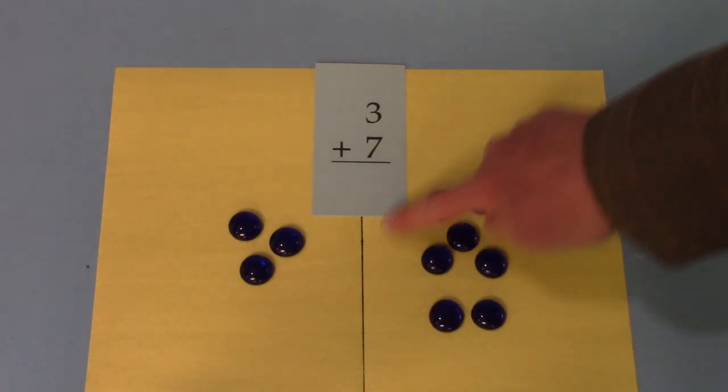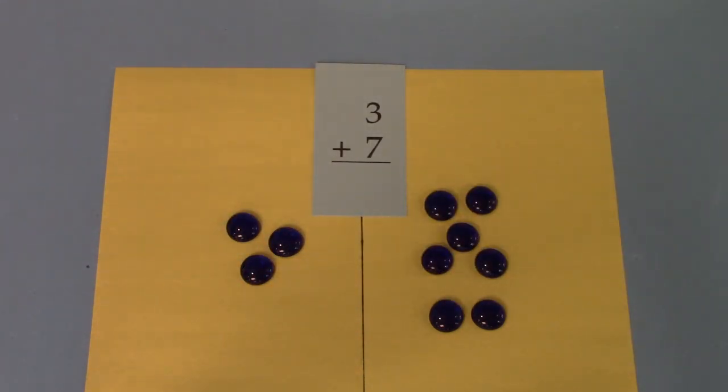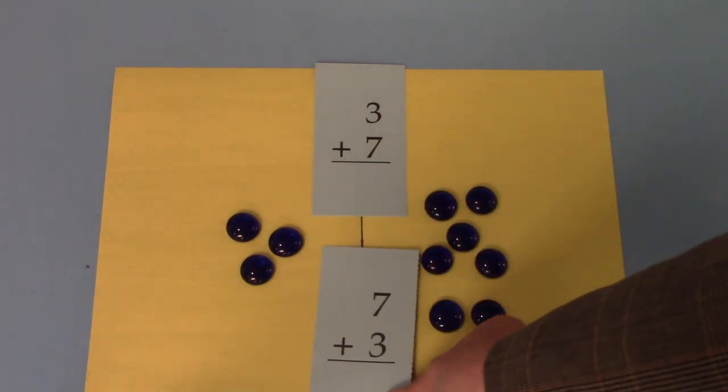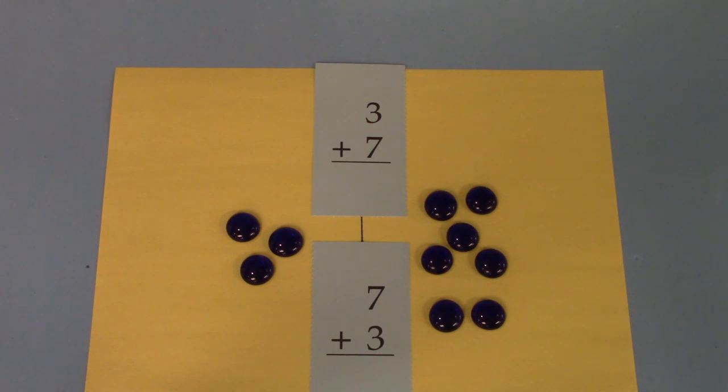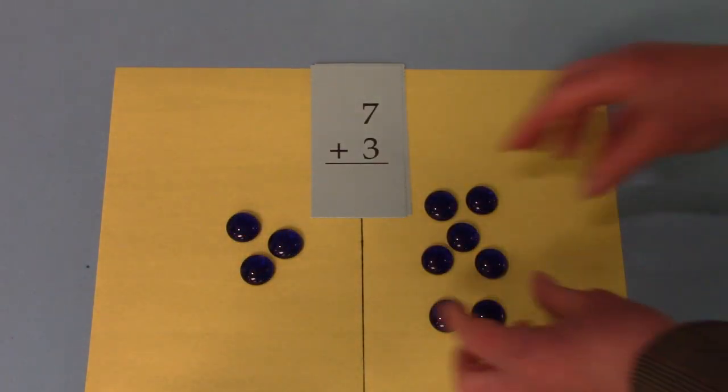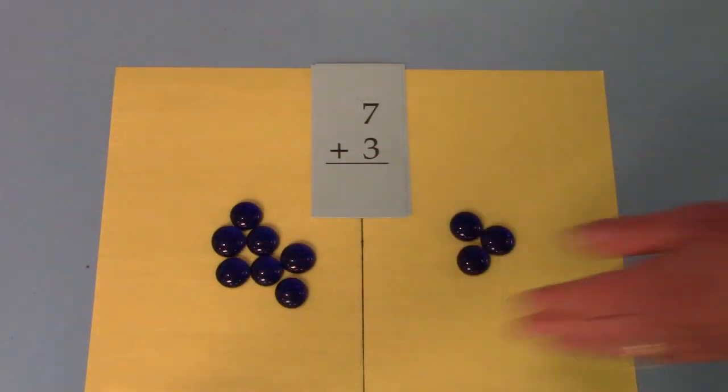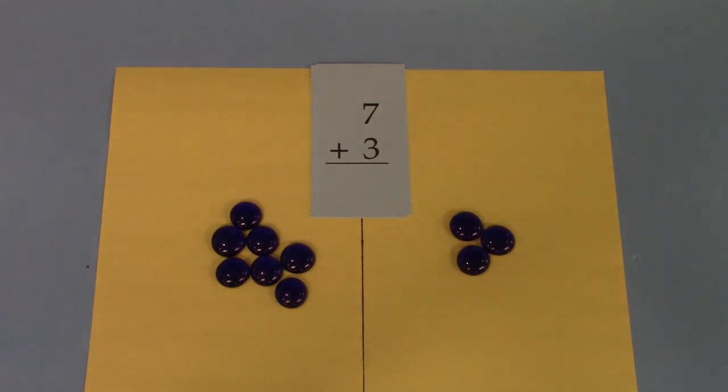I have seven on this side so I'm not going to count it again. Seven. And I'm just going to add on. Seven, eight, nine, ten. We had another math fact that was very similar to that. It was seven plus three. Both of these equal ten because it doesn't matter. If we just flip these and take these seven and put them on this side and these three over here, that's not going to change the amount that we have. It just changes where they are.